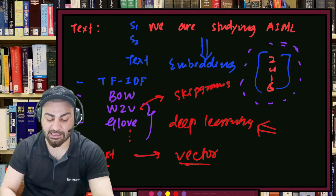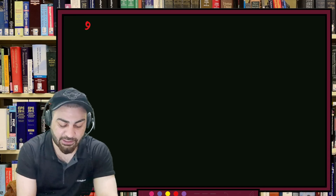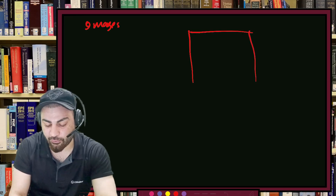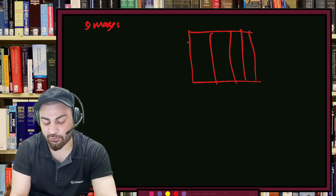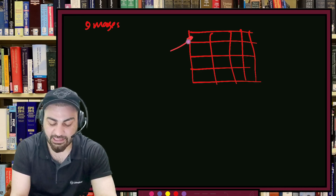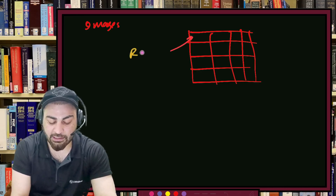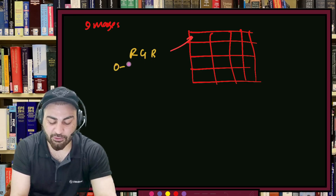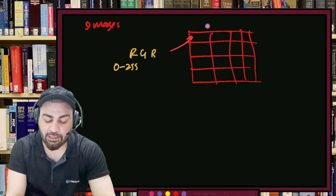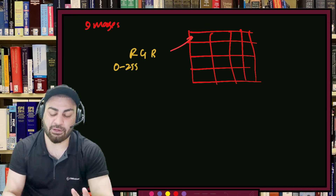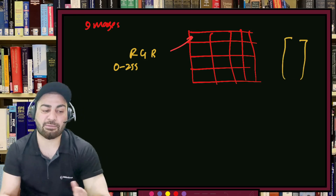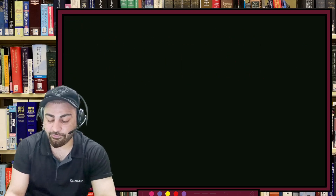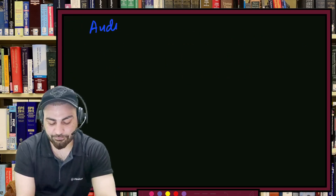For images: each pixel in a colored image has three values — Red, Green, and Blue (RGB) — each ranging from 0 to 255. So each pixel is represented by three numbers, meaning images are also represented as vectors.